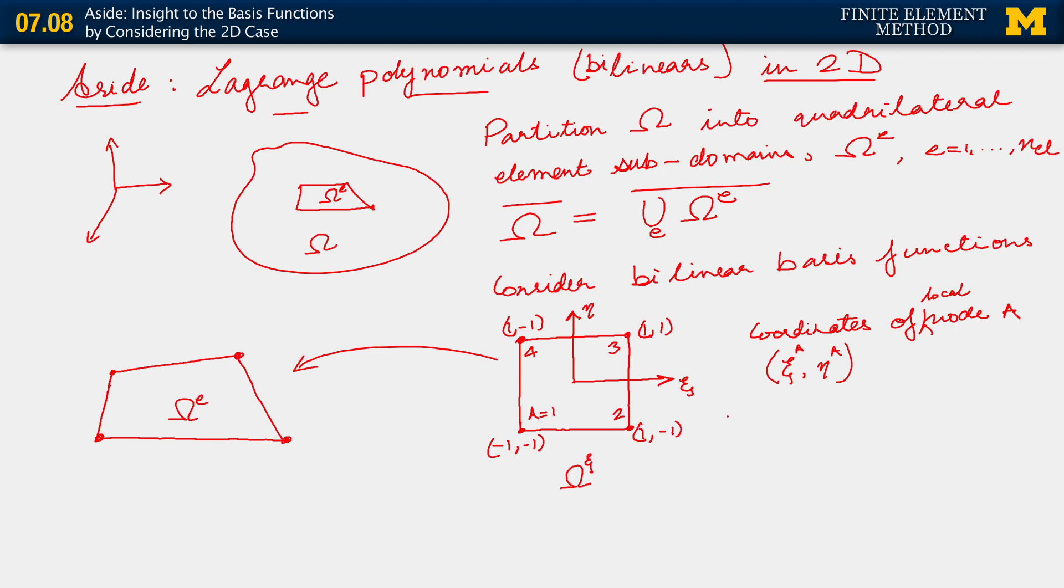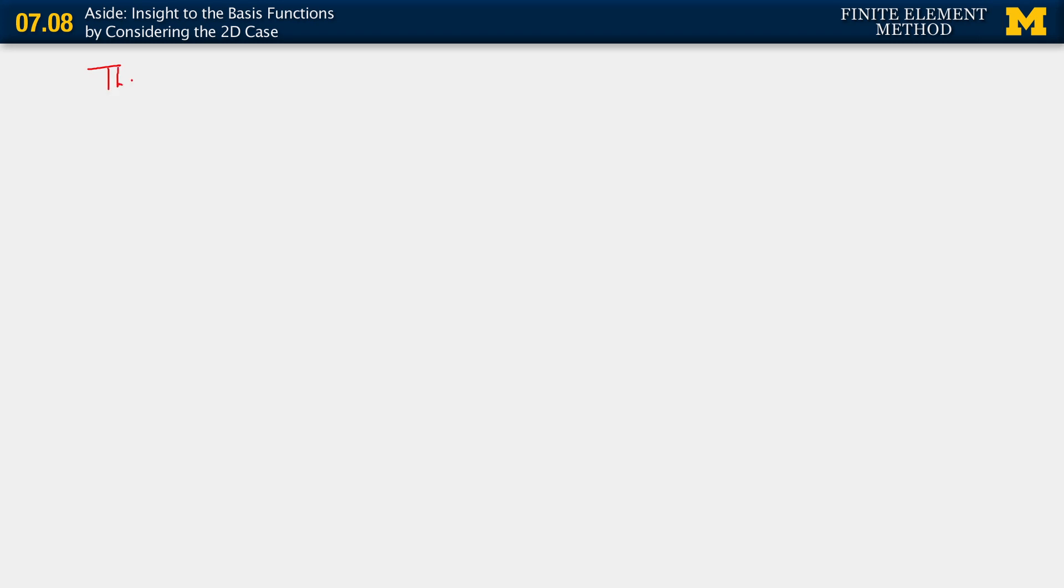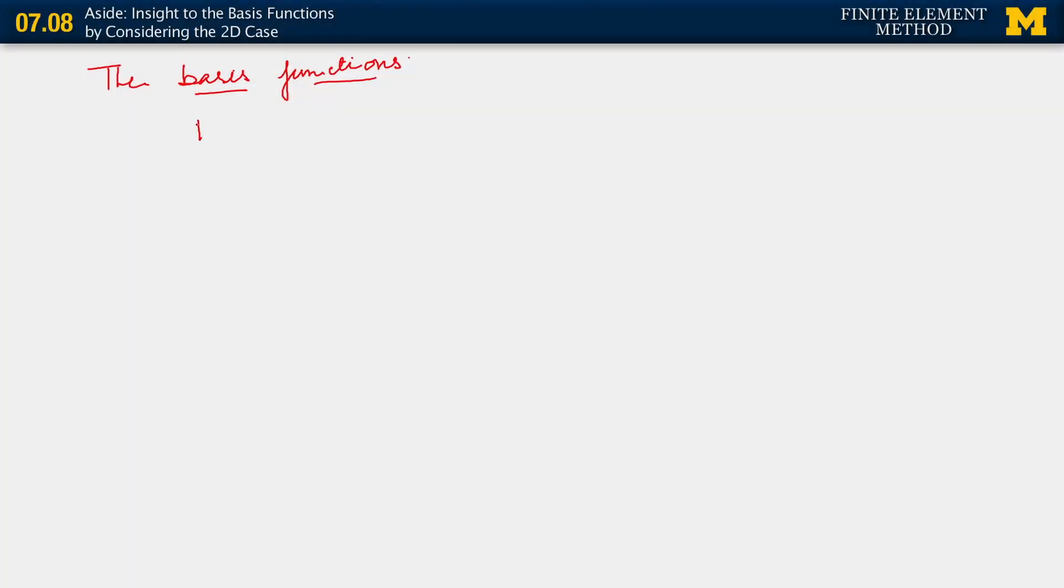In this setting then, here are our basis functions. So, the basis functions are the following: N1(xi, eta) equals 1/4 (1 minus xi)(1 minus eta).